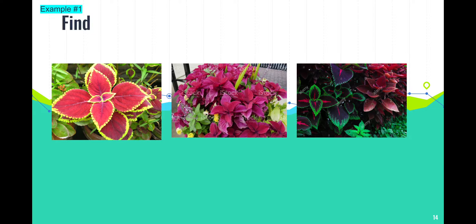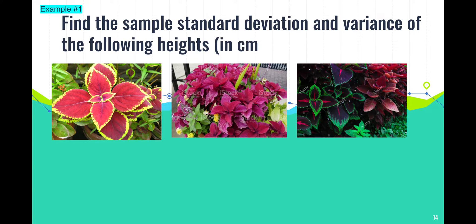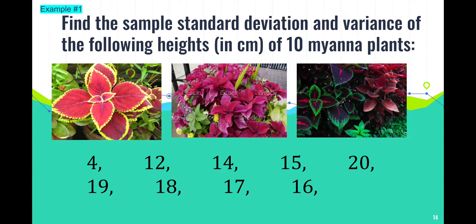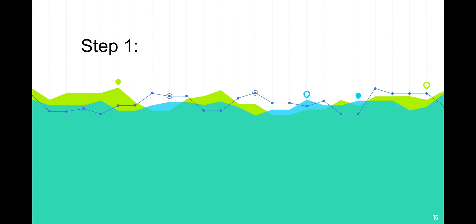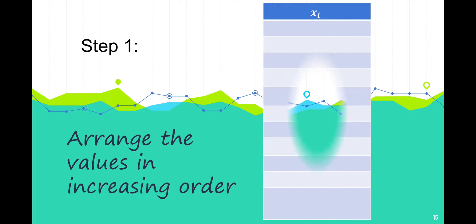For example, find the sample standard deviation and variance of the following heights in cm of 10 miyana plants: 4 cm, 12 cm, 14, 15, 20, 19, 18, 17, 16, and 25 cm. For the first step, we are going to arrange the values in increasing order, from lowest to highest.